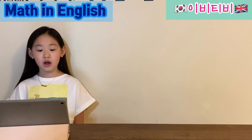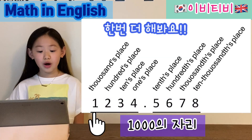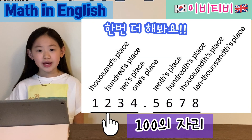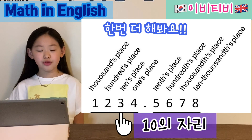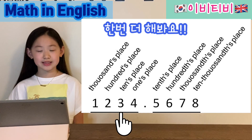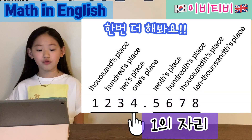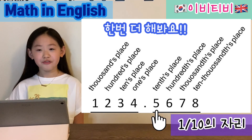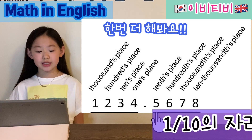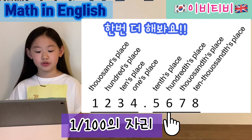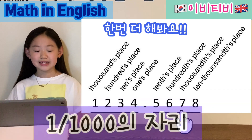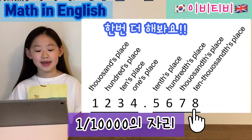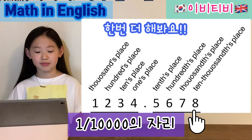7 is in the thousandths place and 8 is in the ten-thousandths place. So to summarize: 1 is thousands, 2 is hundreds, 3 is tens, 4 is ones, 5 is tenths, 6 is hundredths, 7 is thousandths, and 8 is ten-thousandths.